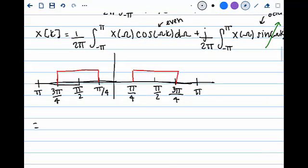Once again, the integral now changes to 2 over 2 pi, integral of 0 to pi of x omega times cosine omega k d omega.